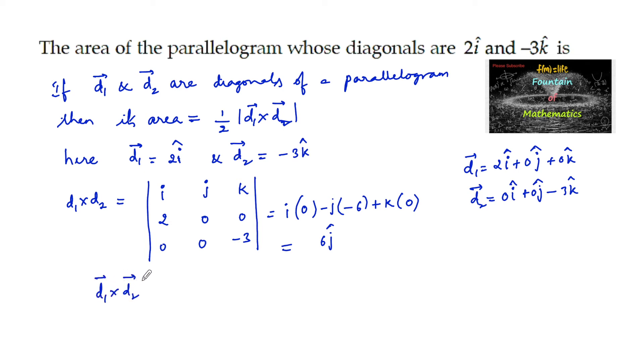The modulus of d1 cross d2 is the modulus of 6j cap, which is 6 times mod j. Since j is a unit vector, this is 6 times 1, which equals 6 units. Therefore, the area of the parallelogram